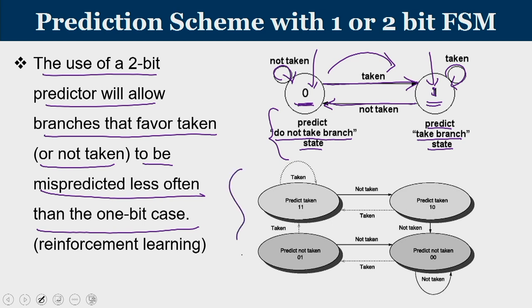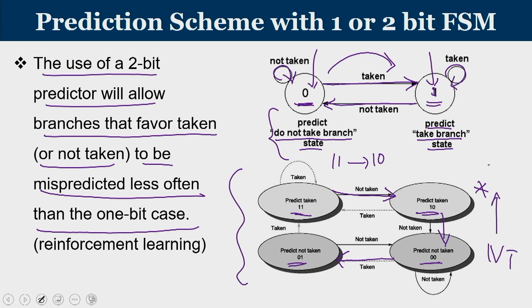A 2-bit predictor can also be used. The use of a 2-bit predictor allows branches that favor taken or not taken to be mispredicted less often than the 1-bit case. With a 1-bit predictor, every misprediction changes the prediction immediately. With the 2-bit predictor scheme, the upper two states — 11 and 10 — predict taken; states 01 and 00 predict not taken. When in state 11, if the branch is actually not taken, the state moves to 10, but the prediction remains taken. Only after two consecutive mispredictions does the state move to a not-taken prediction. Similarly, from state 00, if the branch is taken, the state moves to 01.